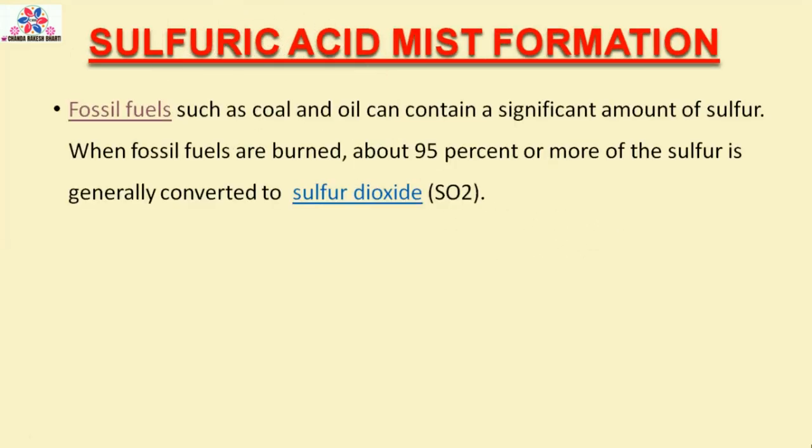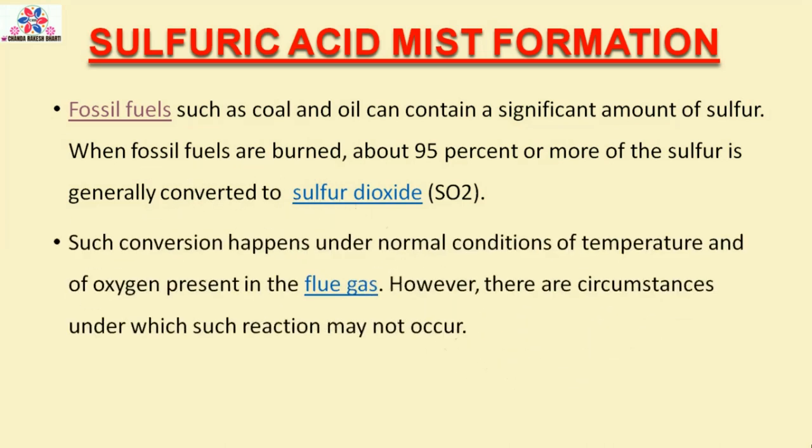Sulfuric Acid Mist Formation: Fossil fuels such as coal and oil can contain a significant amount of sulfur. When fossil fuels are burned, about 95% or more of the sulfur is generally converted to sulfur dioxide. Such conversion happens under normal conditions of temperature and of oxygen present in the flue gas. However, there are circumstances under which such reaction may not occur.